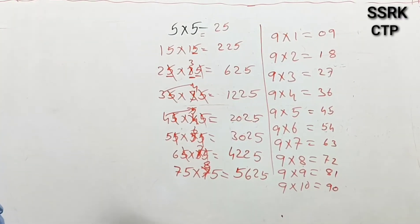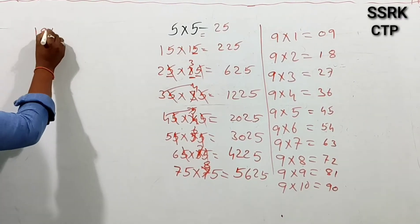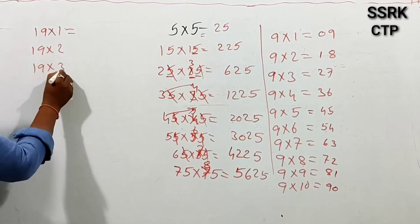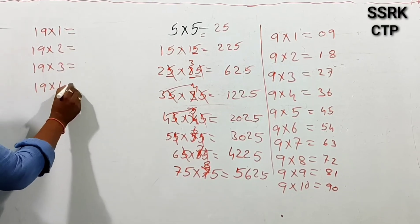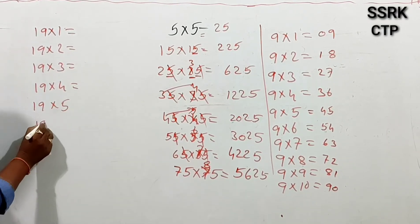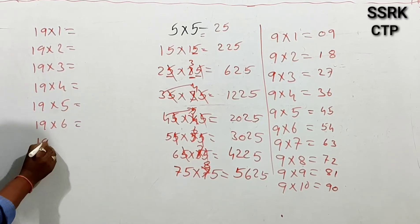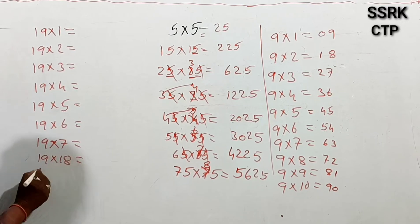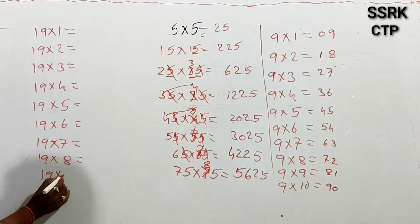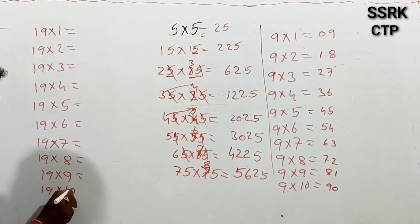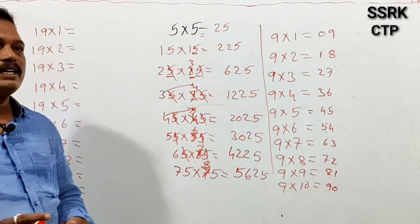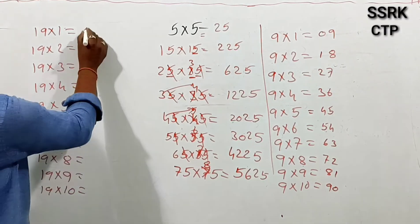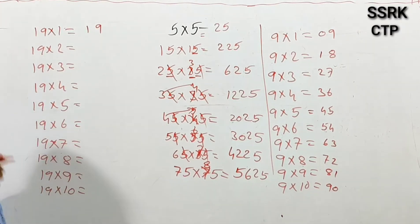We also have the 19 table. 19×1 is 19, 19×2 is 38, 19×3 is 57, 19×4 is 76, 19×5 is 95, 19×6 is 114, 19×7 is 133, 19×8 is 152, 19×9 is 171, 19×10 is 190. These scores are the odd numbers starting to score.